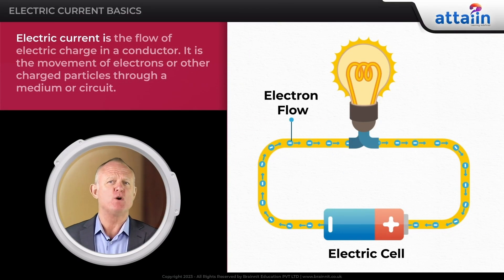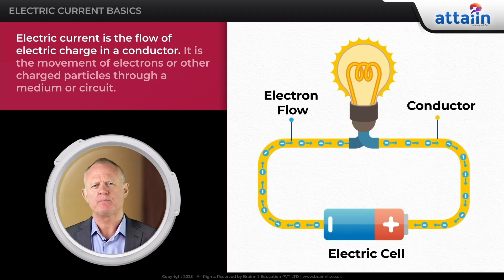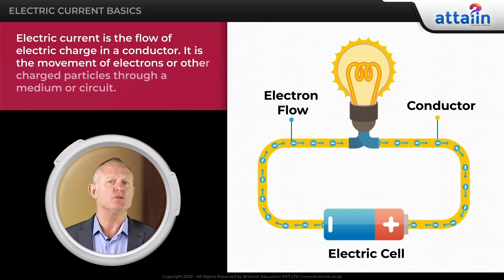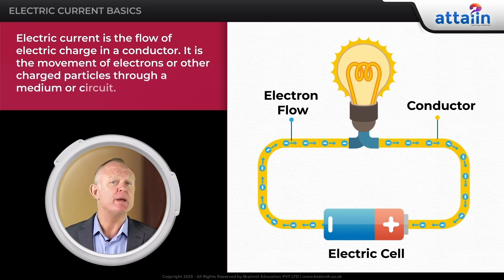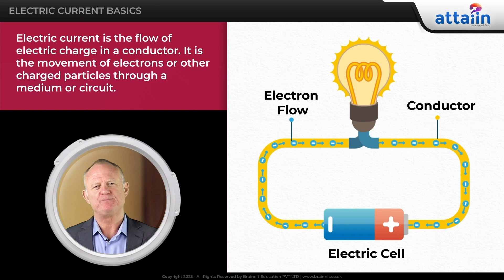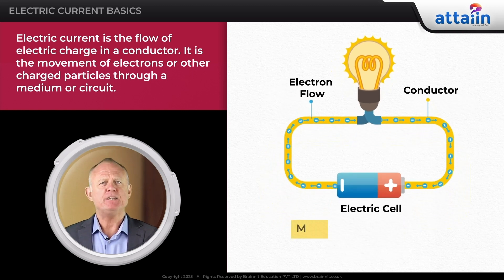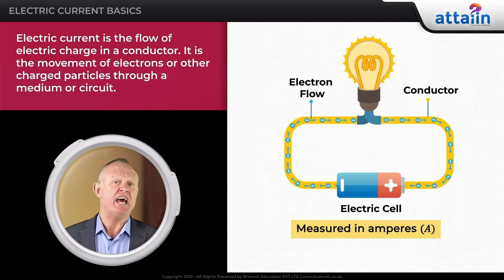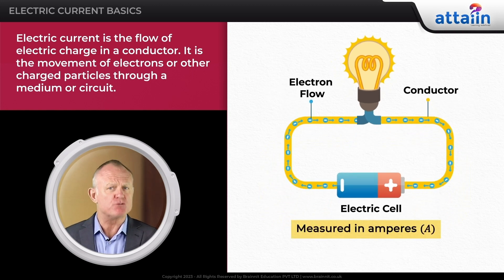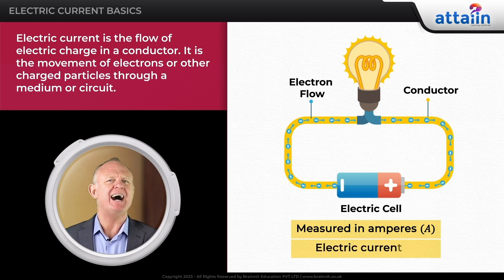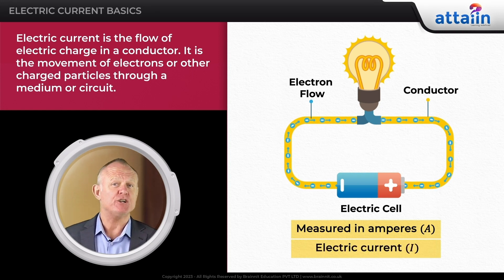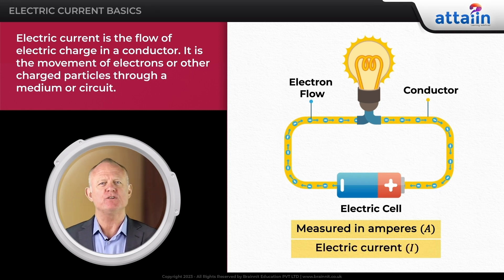Electric current is the flow of electric charge in a conductor. It is the movement of electrons or other charged particles through a medium or circuit. It is measured in amperes, A, and is represented by the symbol I. In a circuit, electrons are the charged particles.